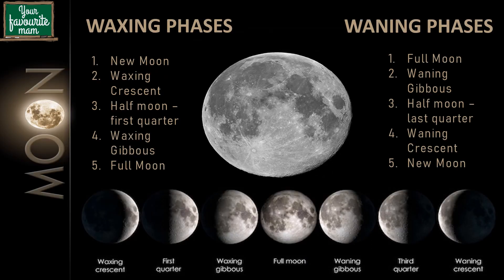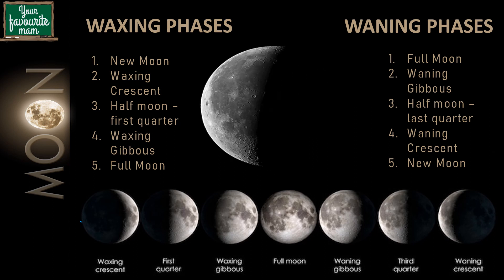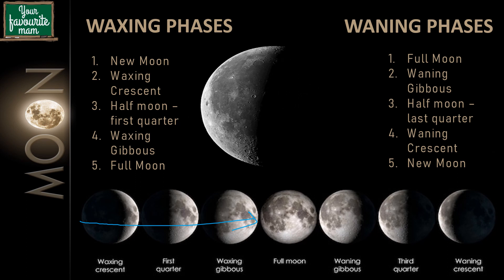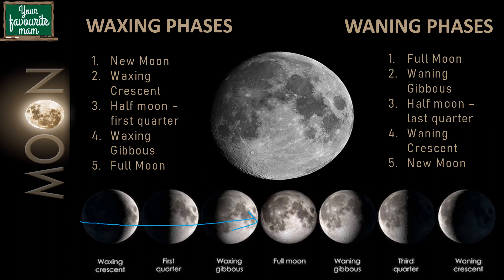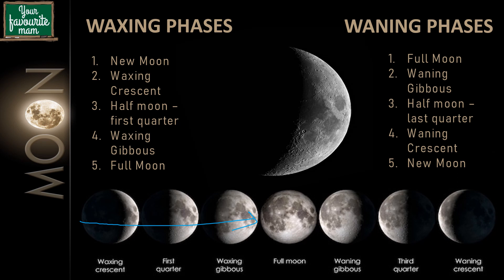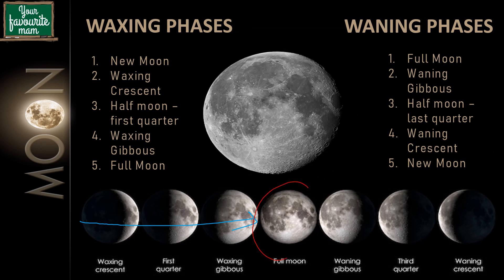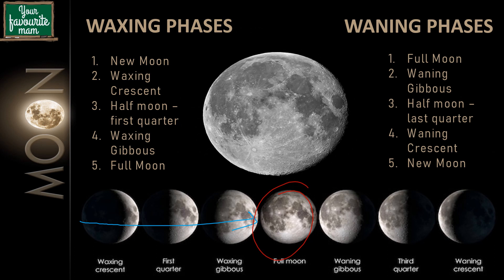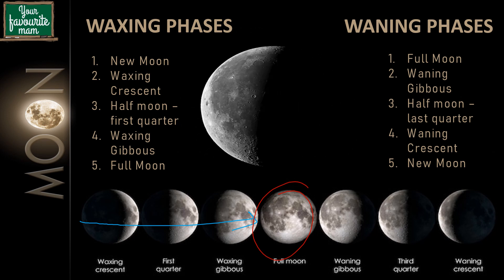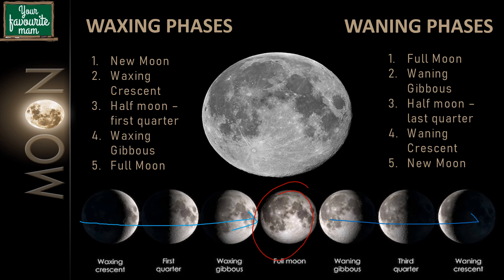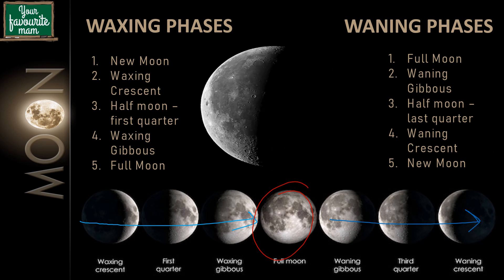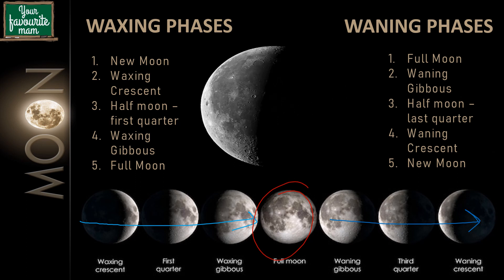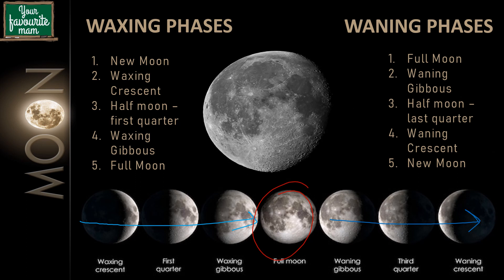The waxing phase of the moon goes from the new moon to the full moon — starting with new moon, then waxing crescent, then half moon, then waxing gibbous, and finally the full moon. The waning phases start from the full moon and go back to the new moon, entailing full moon, then waning gibbous, then half moon or the last quarter, then waning crescent, and finally the new moon.